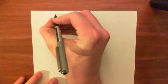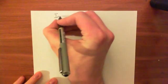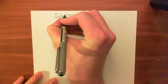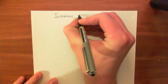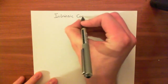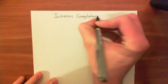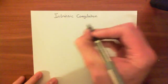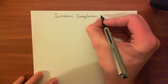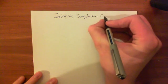Welcome to this first video in this playlist on inflammation and angiogenesis. In this video, we're going to look at the intrinsic coagulation cascade. It's called the intrinsic coagulation cascade because, unlike the extrinsic coagulation cascade, it doesn't require a protein from outside of the blood to activate it.